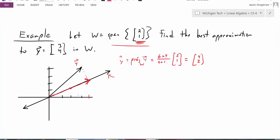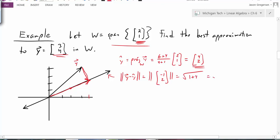Now how good is that approximation? Well, I could calculate the error. The error in my approximation would be this distance. It would be the magnitude of y minus y-hat. So in this case, that is the distance between my vector [3,4] minus my vector [4,2]. If I subtract those two vectors, I get [-1,2]. And the magnitude of that vector is the square root of 1 plus 4, or root 5.